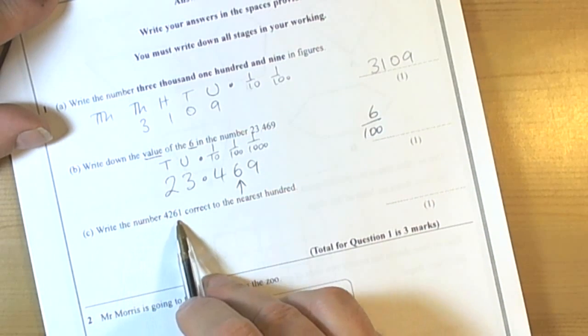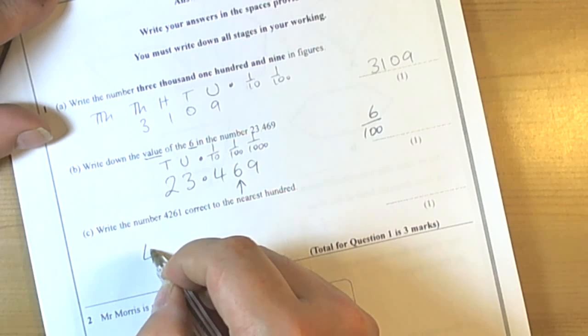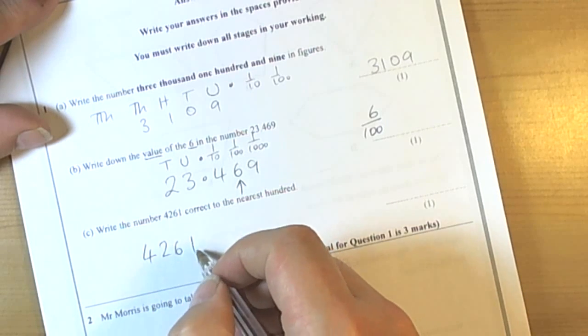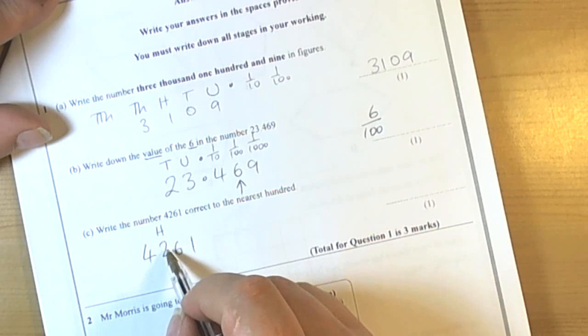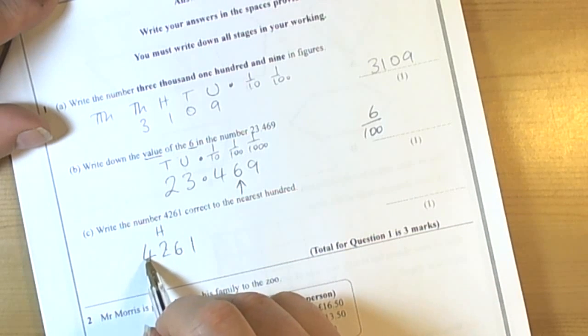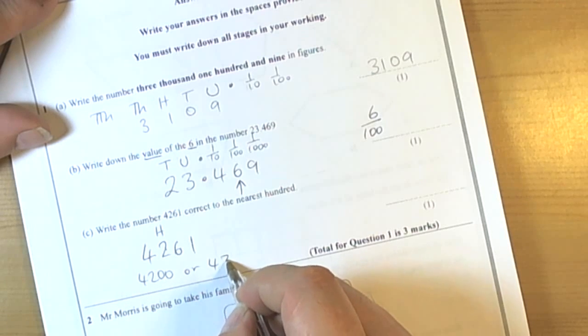The question here is asking you to round to the nearest hundred. So again, when we look at the number, the hundreds column is here. Units, tens, hundreds. So we're talking about either 4,200 or 4,300.